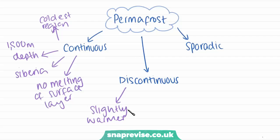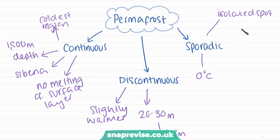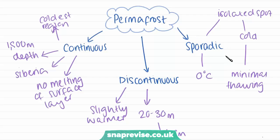The discontinuous layer is in areas that are slightly warmer than the colder regions of Siberia, such as in northern Canada, though they're still very cold. The ground is frozen roughly between 20 to 30 metres deep, and on some occasions can reach up to about 45 metres. Sporadic permafrost is where mean temperatures are just around freezing, so permafrost only occurs in isolated spots where the local climate is cold enough, with minimal thawing during summer.